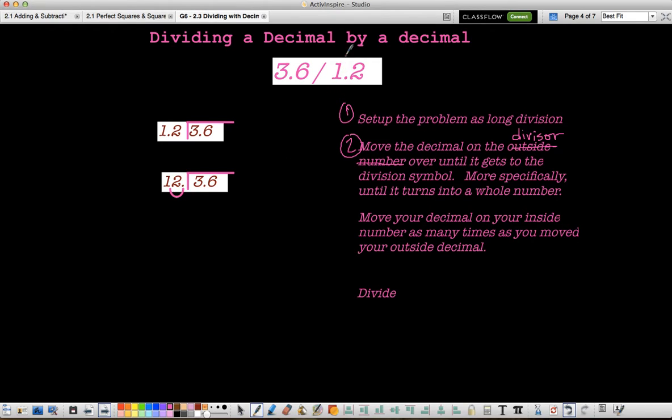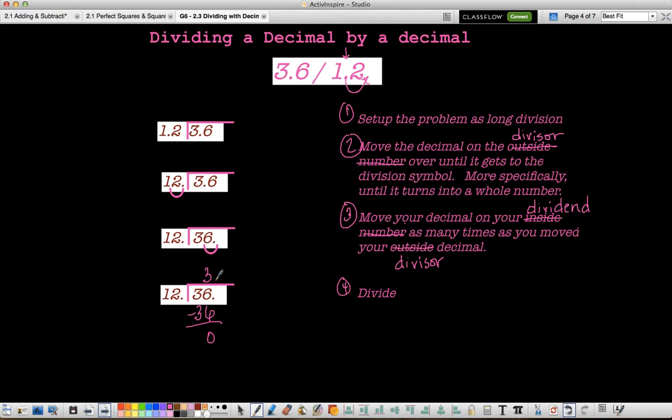I have to know that whatever I do to my divisor, I have to do to my dividend. So move your decimal on your dividend as many times as you moved your divisor decimal. So now what that means for me is that I've moved it once in my divisor, so I move it once on my dividend, and then I go ahead and I divide. I know 12 goes into 36 three times. Three times 12 is 36. I subtract and I get zero. So yes, I could pull the decimal straight up, but since we always want to give our answers in the best form possible, we know that the answer here would just be three.